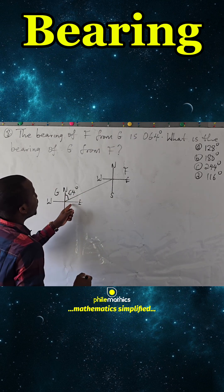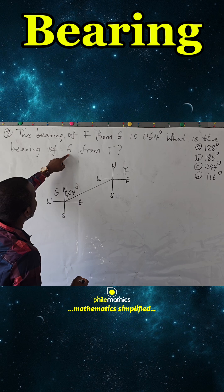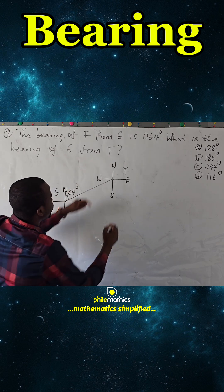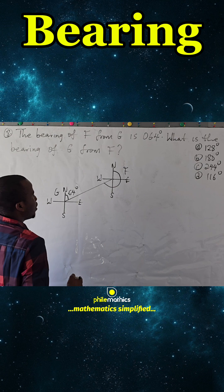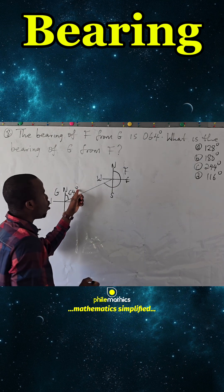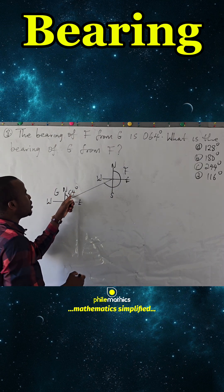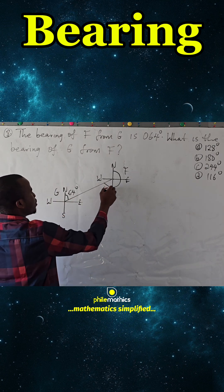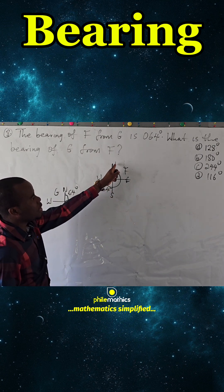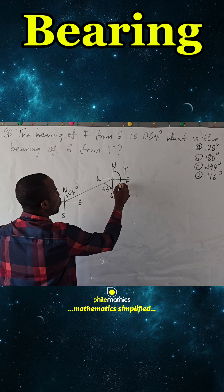The bearing of G from F will be from this true north to this line. From alternate angles, if this is 64, this is 64 also degrees. And we know this is an angle on a straight line which is 180 degrees.